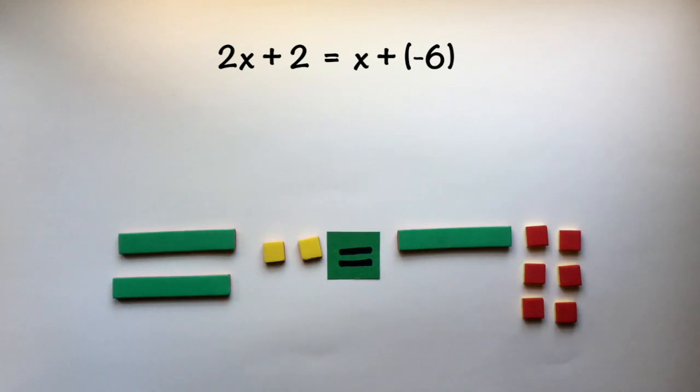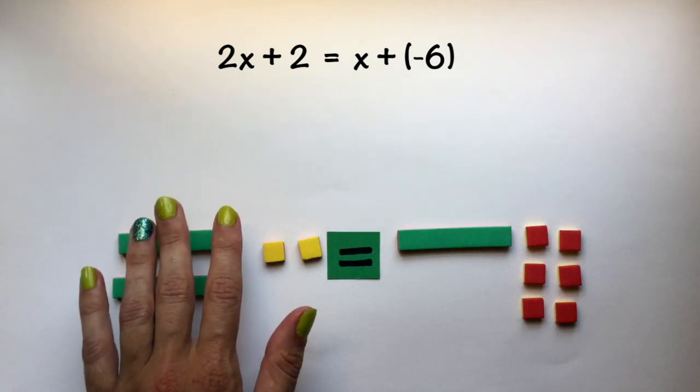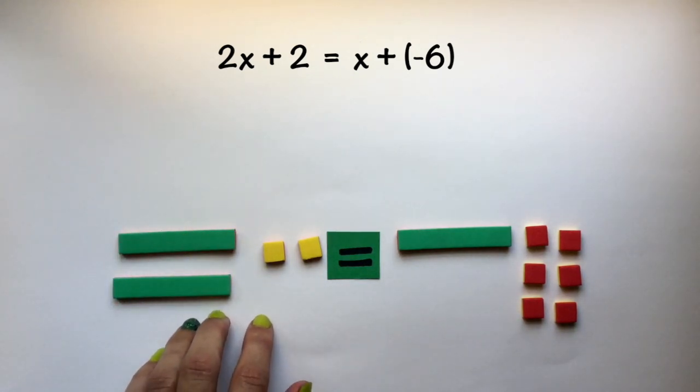Now if our goal is to isolate our variable, we have variables on both sides. Let's first worry about eliminating all constants from this side of our equation.